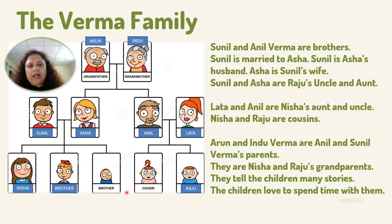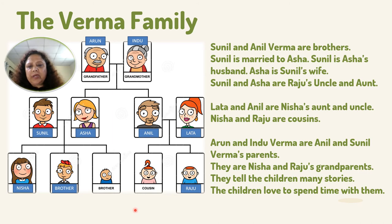Nisha and Raju are cousins. Arun and Indu Varma are Anil and Sunil Varma's parents. They are Nisha and Raju's grandparents. They tell the children stories, and the children love to spend time with them.